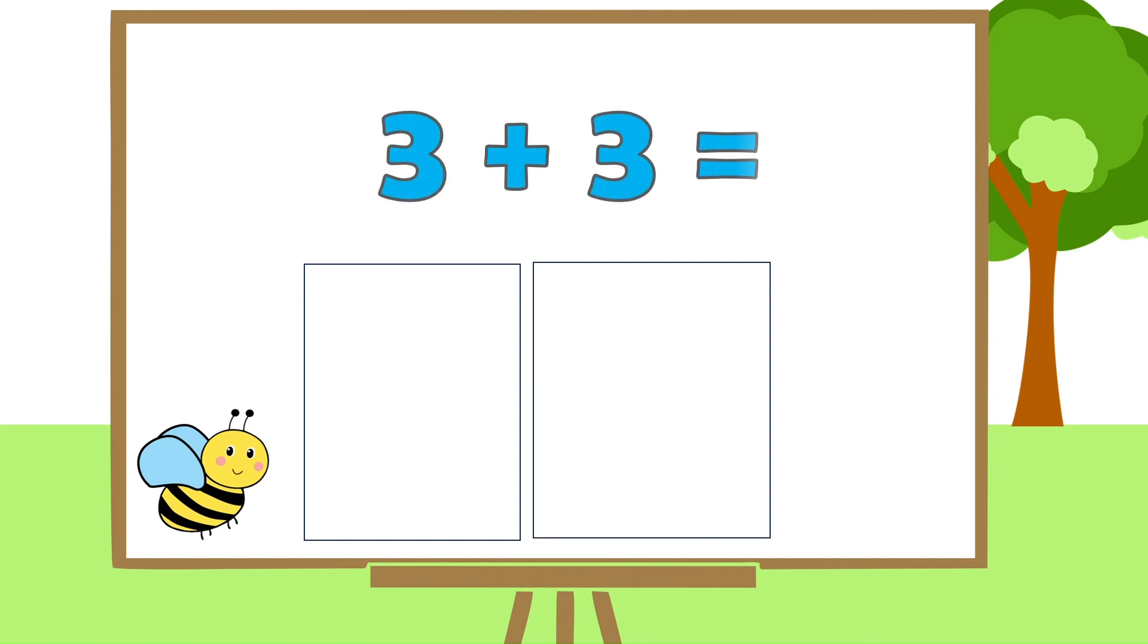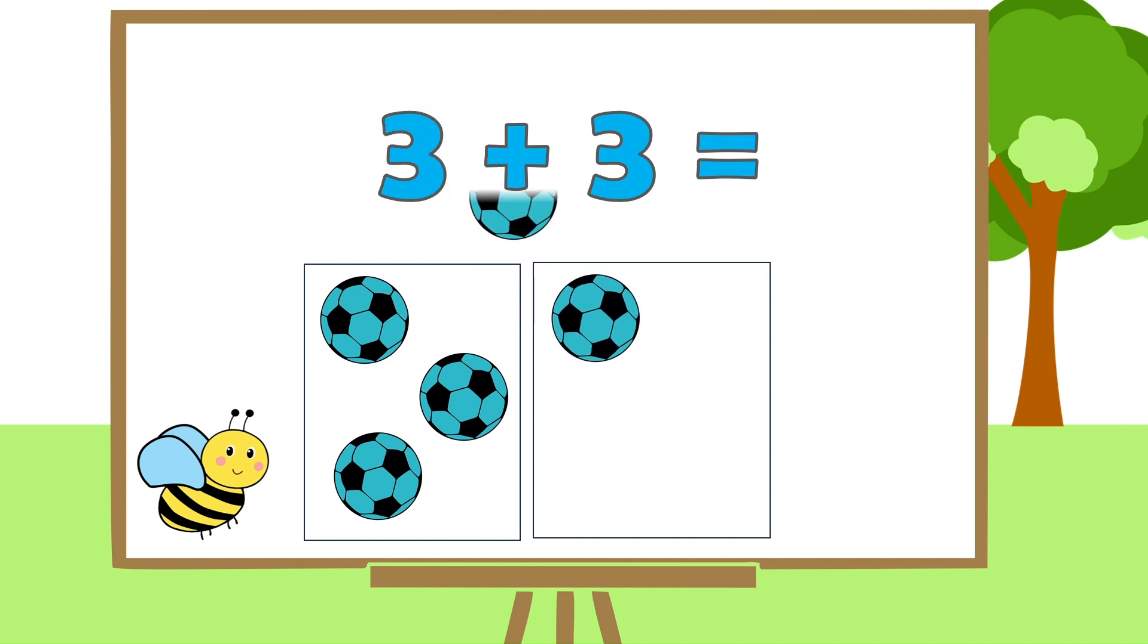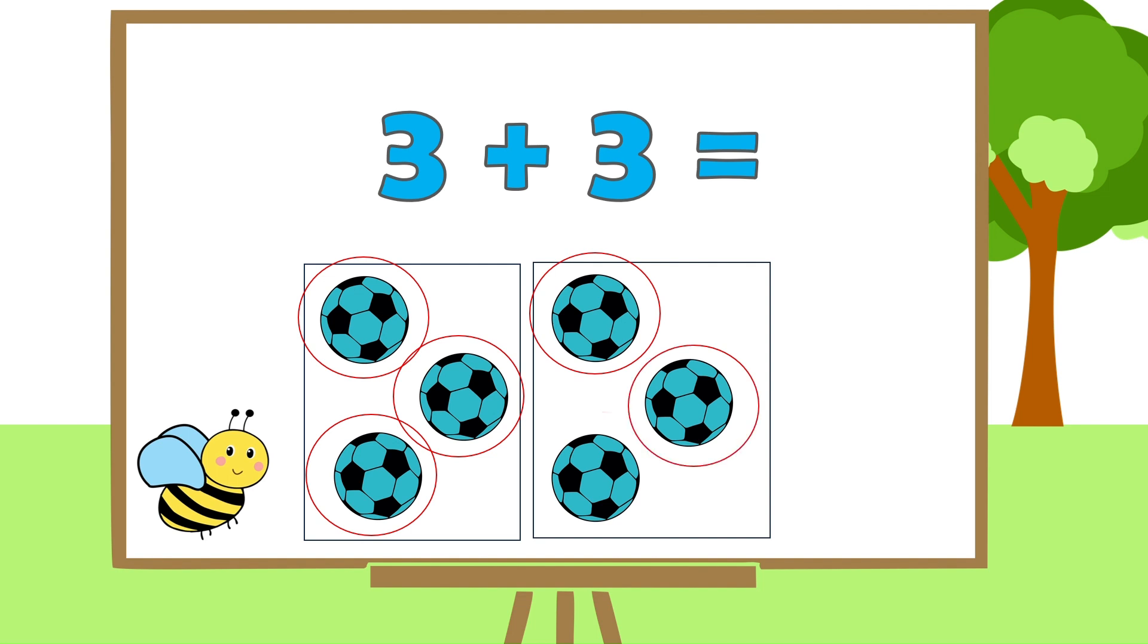Now, let's find out what 3 plus 3 is. Let's place 3 balls under 3. And 3 balls under the other 3. Now, just count them all. 1, 2, 3, 4, 5, 6. So, 3 plus 3 is? 6, that's right!